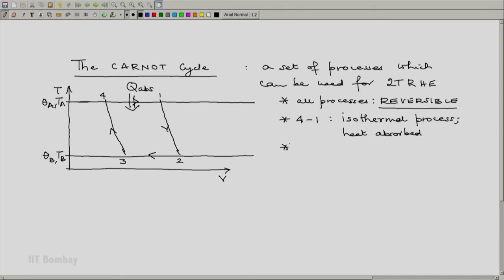Then the second process 1-2 is adiabatic and it is of course an expansion. In 4-1 also there is an expansion involved. You can see the volume increasing from 4-1. But important thing in this adiabatic expansion is that the temperature reduces from T1 to T2. And remember that T1 equals T_A, T4 equals T_A also.